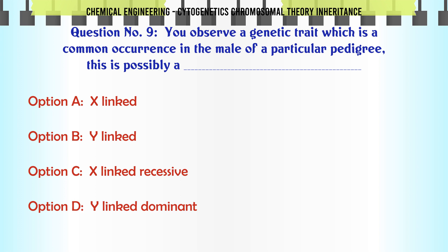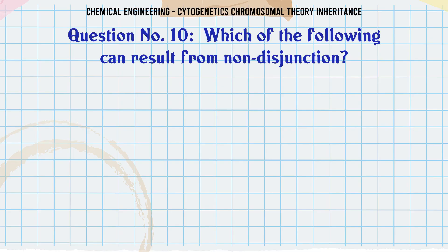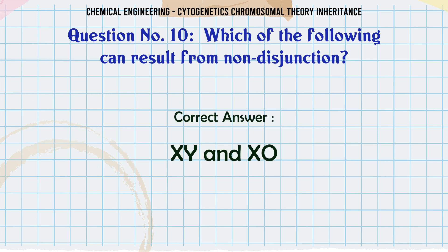Which of the following can result from non-disjunction? A: XY and XO. B: YY and XY. C: X and Y. D: XY and XXY. The correct answer is XY and XO.